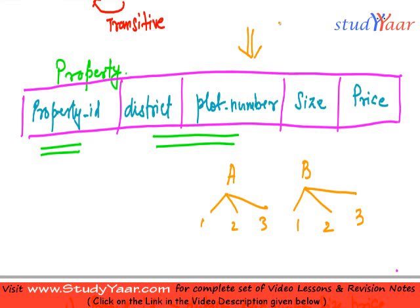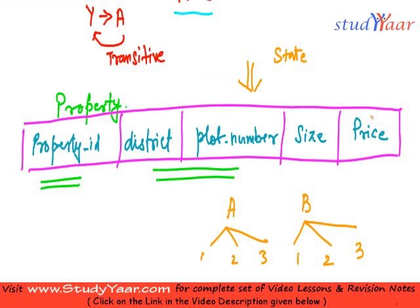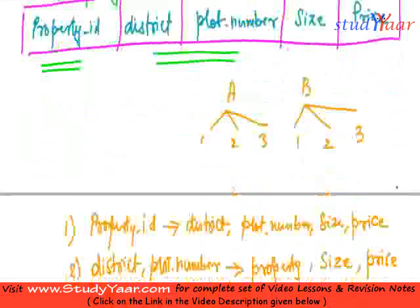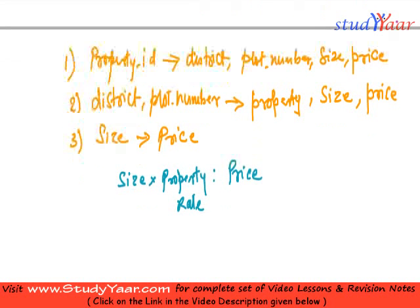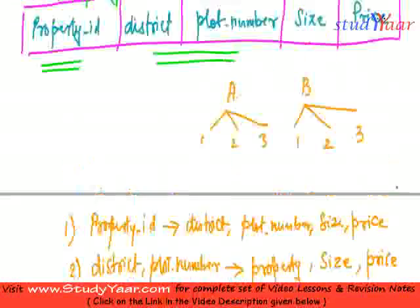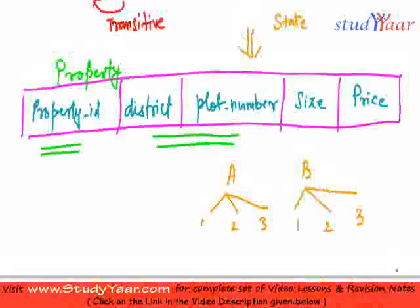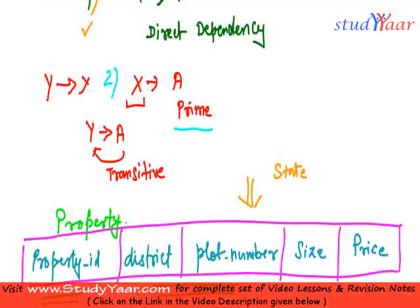I am, let's suppose, talking about a state and I have many districts in this state. And I say property rates are same across the entire state, just for the sake of simplicity. In that case, my price would be what? My price would be size into property rate. And since my property rate is fixed, my price is entirely determined by my size. So I have these three FDs. Now let's see if this is in third normal form.